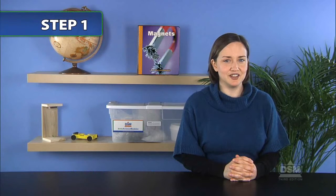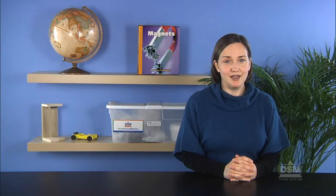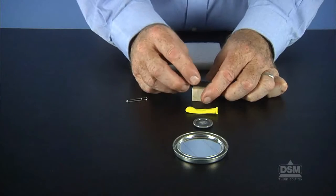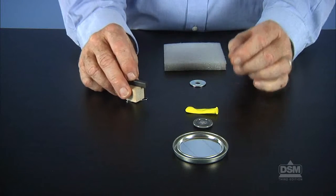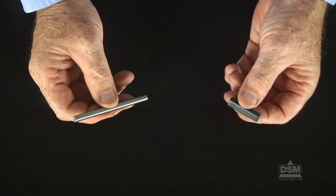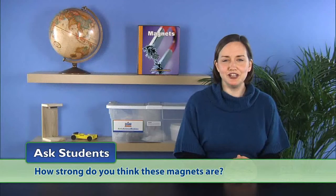To begin the activity, remind the students of the tests they conducted in Activities 2 and 3 to determine which objects the magnet did and did not attract and which objects did and did not block the magnetic force. Then hold up a rod magnet and a small magnet and ask students, how strong do you think these magnets are?